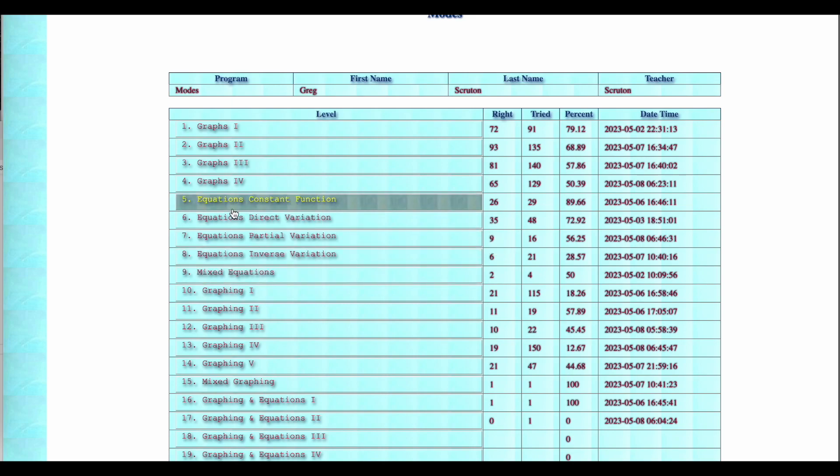Level 9 is mixed of those. Level 10 to level 14 is graphing constant functions, direct variation or proportional situations. Then you're graphing partial variations, straight lines that don't go through the origin.